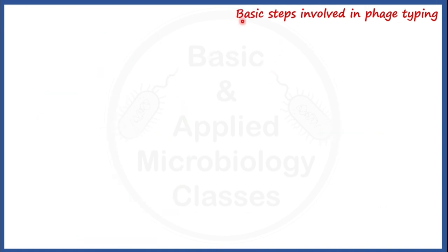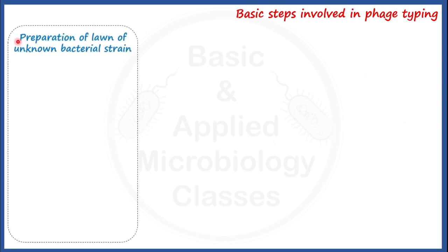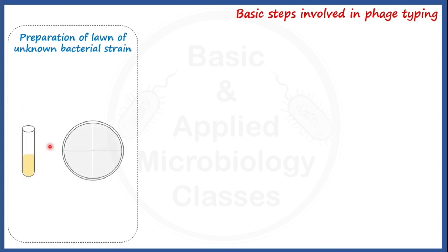Here we are going to talk about the basic steps involved in phage typing. If we want to carry out phage typing for an unknown bacterial culture in the laboratory, the first step is preparation of a lawn of the unknown bacterial culture. We take the unknown bacterial culture and a solid microbiological medium petri plate. We inoculate the bacterial culture heavily onto the plate — divided into sections here — so that bacteria grow as a solid sheet, which we call the lawn of the bacterial strain.